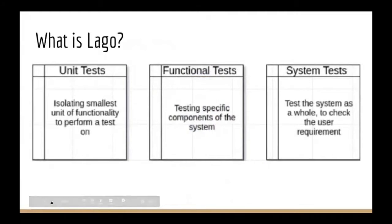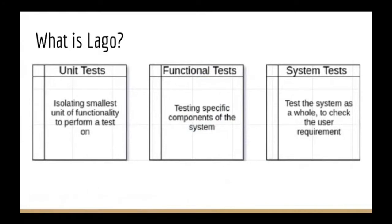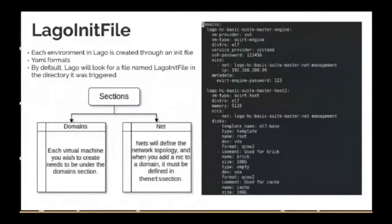We can divide testing into three broad categories: unit tests, which is basically isolating the smallest functionality to perform a test; functional tests, which implies testing a specific component of the system; and system tests, which as the name suggests, require testing a whole system end to end — starting from deployment through to verifying expected results. Lago helps us create environments on top of which we can run unit and functional tests, so Lago is essentially a system testing tool.